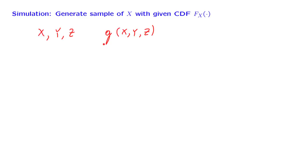Perhaps you can find the distribution of this random variable by solving a derived distribution problem. But sometimes this is impossible. In such cases, what you do is generate random samples of these random variables drawn according to their distributions, and then evaluate the function g on that random sample. This gives you one sample value of this function, and you can repeat that several times to obtain some kind of histogram, and from that get some understanding about the statistical properties of this function.